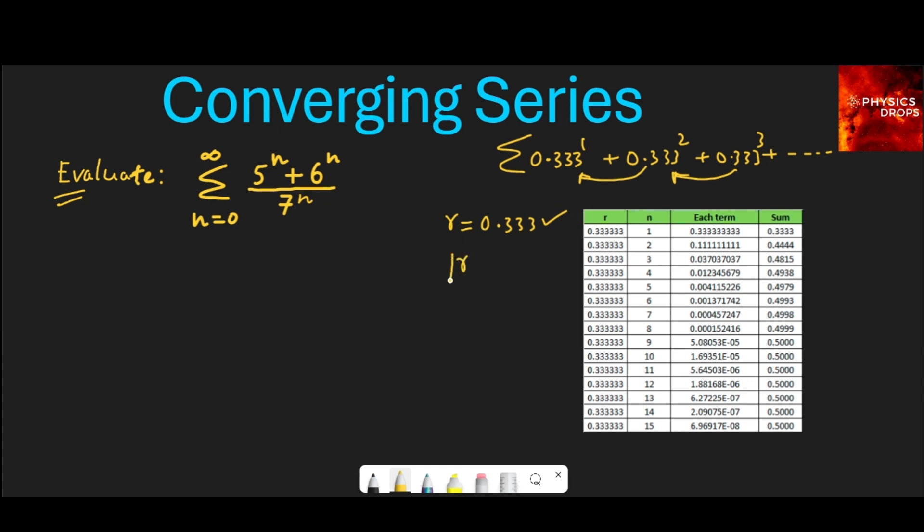For a geometric series, if the value of r is less than 1, then the sum of the geometric series is given by the first term, which is denoted by a, upon 1 minus the ratio r.